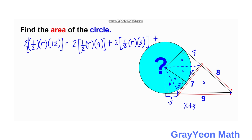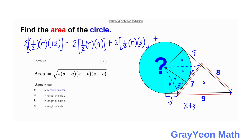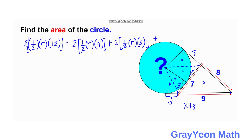Setting aside the equation, we next find the area of the triangle with sides 7, 8, and 9 using Heron's Formula. The area equals the square root of s times (s minus a) times (s minus b) times (s minus c), where s is the semi-perimeter. So s equals one half times (7 plus 8 plus 9), which is one half times 24, giving s equals 12.